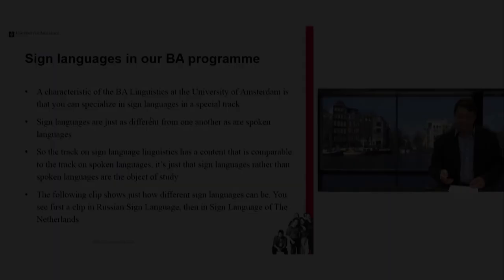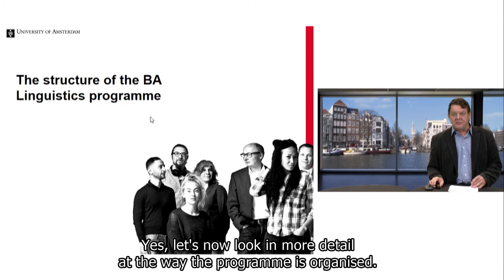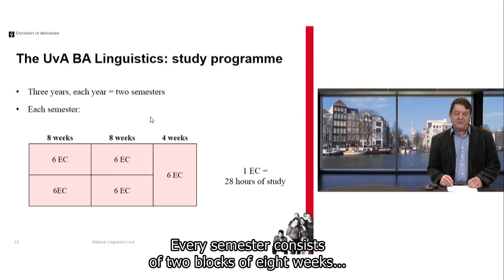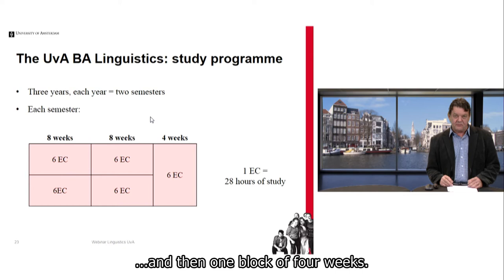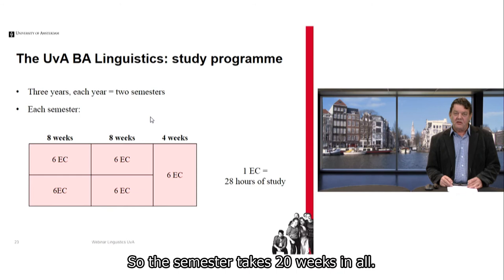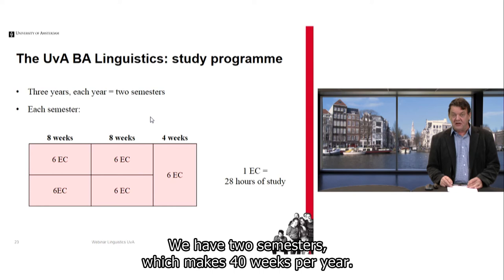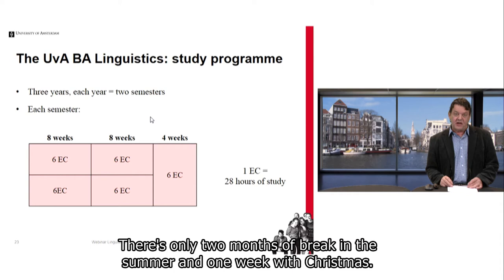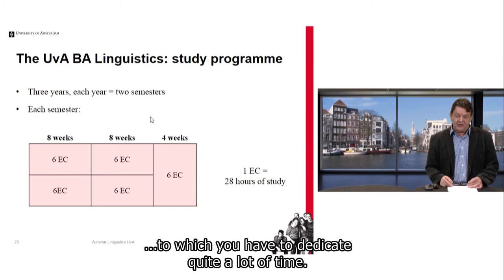Let's now look in more detail at the way the programme is organised. The University of Amsterdam organises its year in two semesters. Every semester consists of two blocks of eight weeks and then one block of four weeks. During the eight-week blocks you have two parallel courses, and during the four-week block you have one intensive course. So the year takes 40 weeks in all — it's long and intensive, with only two months' break in summer and one week at Christmas. You have to count on dedicating quite a lot of time to this programme.